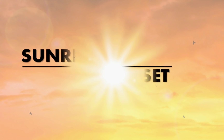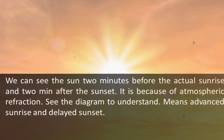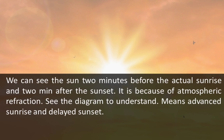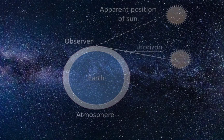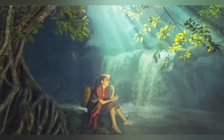We can see the Sun two minutes before the actual sunrise and two minutes after the actual sunset. This is because of atmospheric refraction. See the diagram to understand — this diagram explains why we see the sunrise two minutes before and the sunset two minutes after.